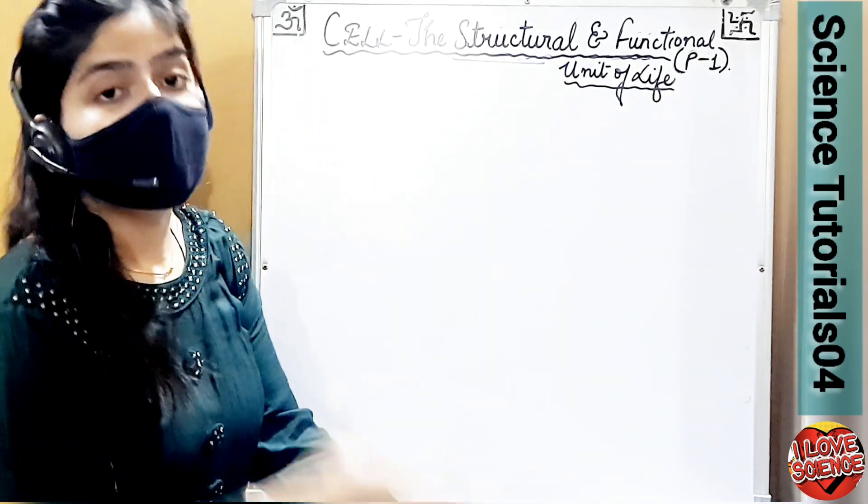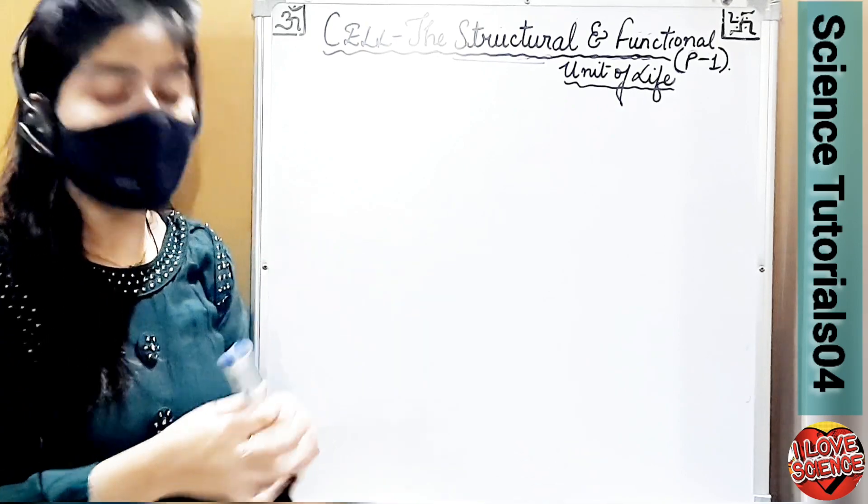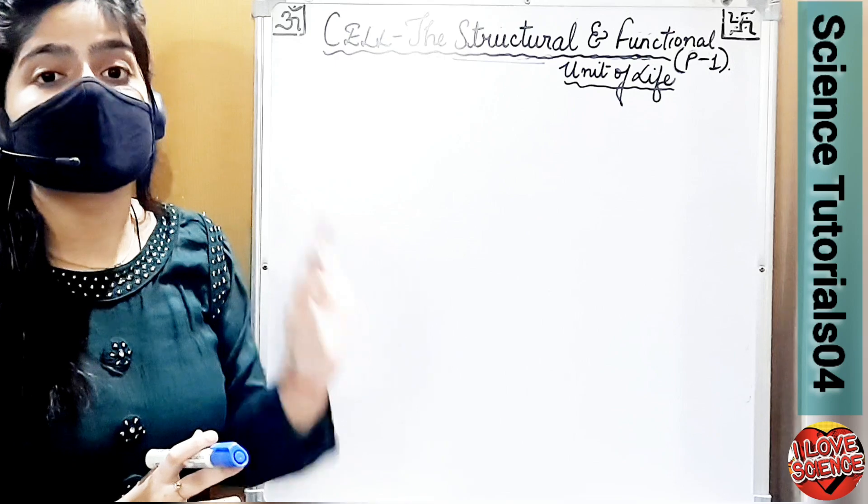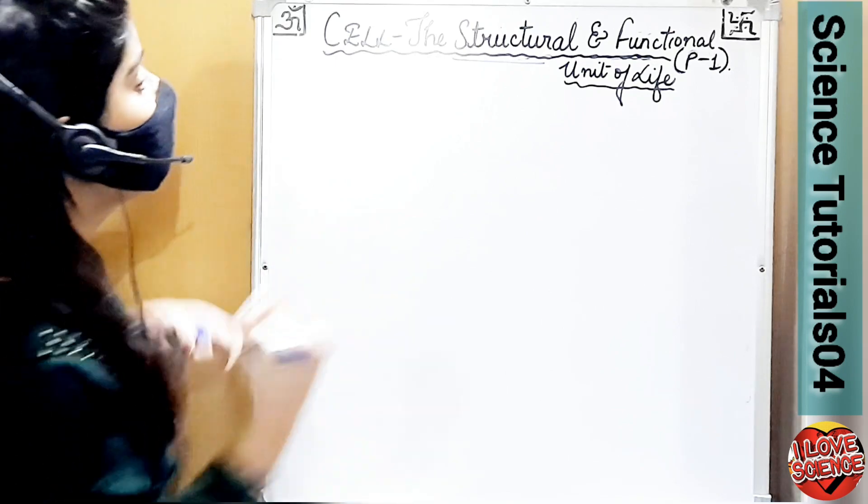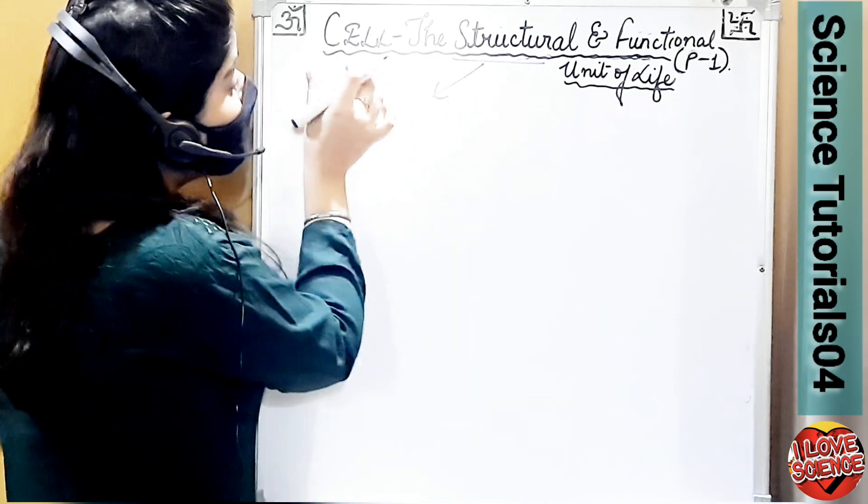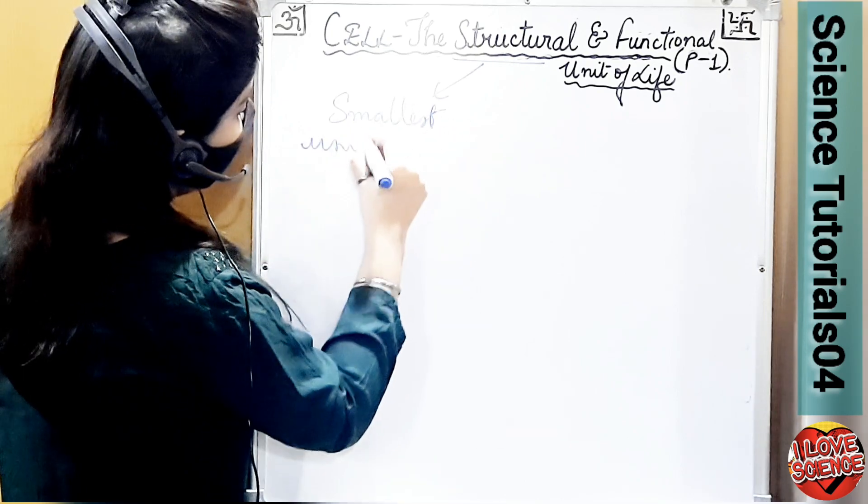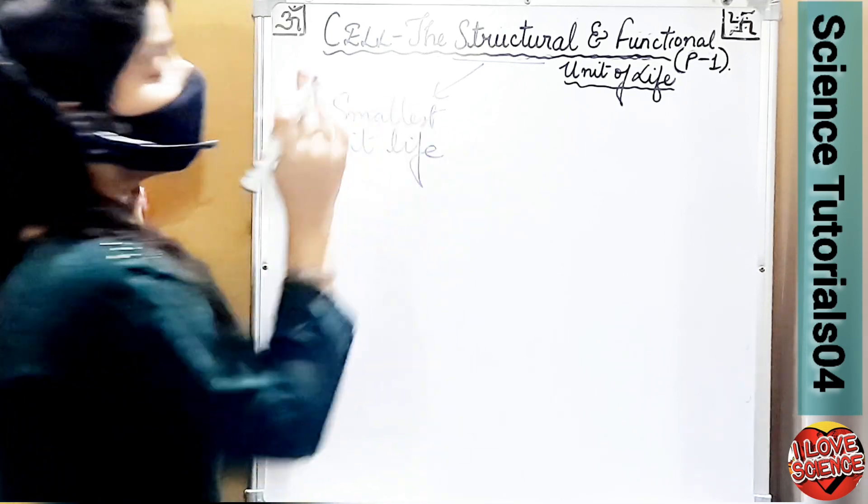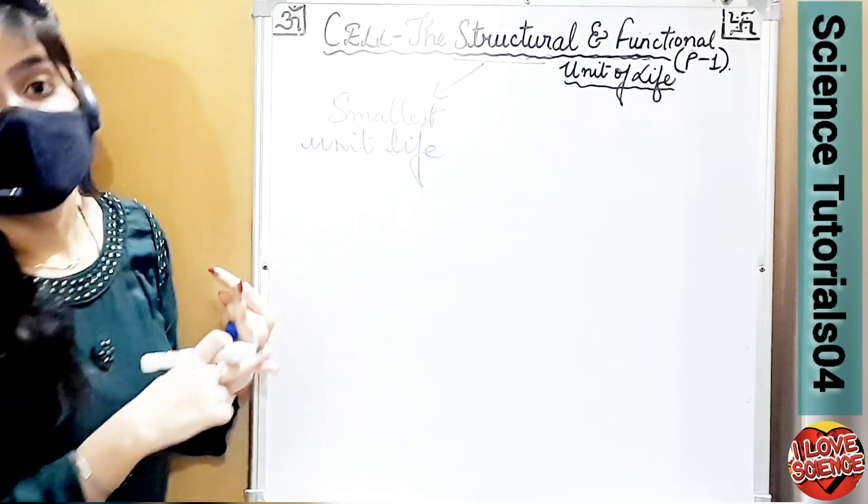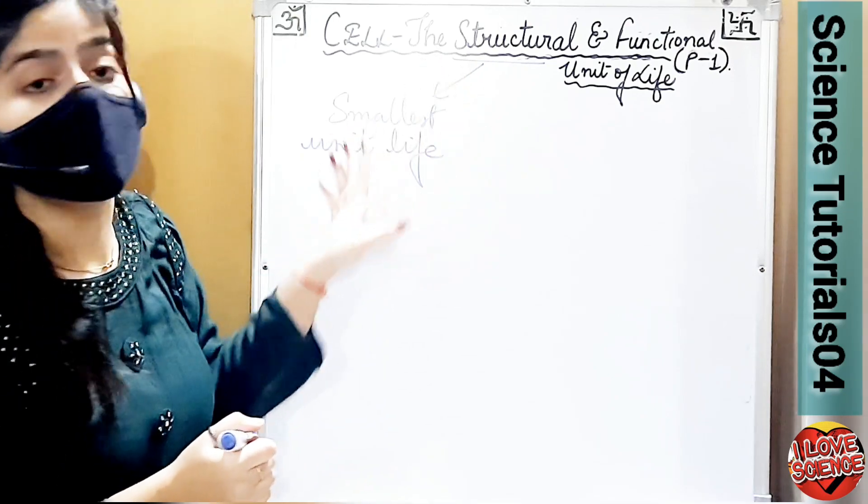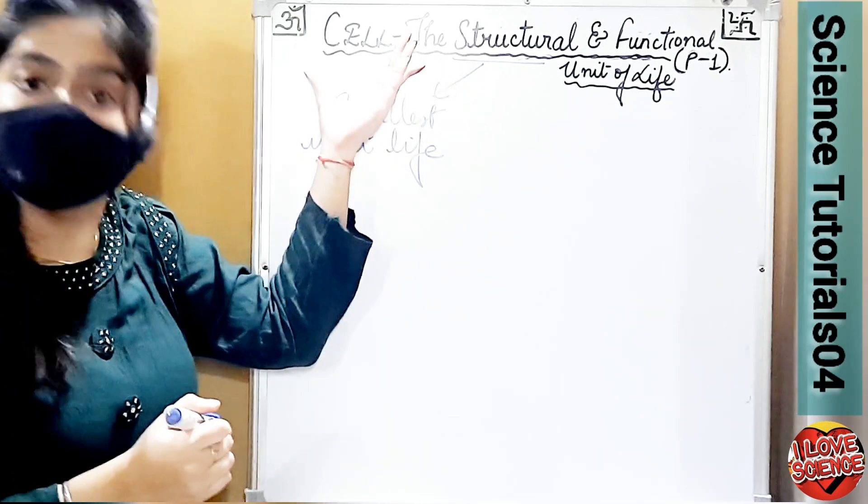What does structural mean? Structural means that the cell is basically the smallest unit of life. Every living organism, whether plants, animals or human beings, are composed of this unit, this smallest unit of life, which is the cell.